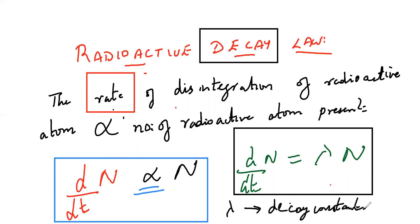In maths, in the application of derivatives chapter, you get something called rate — this particular thing. Rate means d by dt; immediately differentiation should come. And one more thing I will be teaching in the logarithmic part.